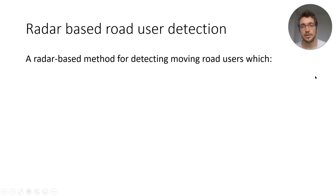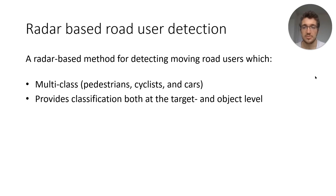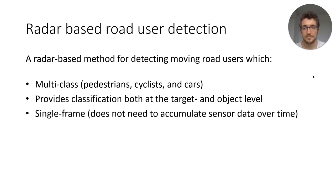Our paper presents a radar-based moving road user detection algorithm. The algorithm is multi-class. It detects pedestrians, cyclists, and cars. It is able to provide this classification information both for each target individually, so at the target level, and at an object level, and it is single frame, which means that it does not need to accumulate sensor data over time.